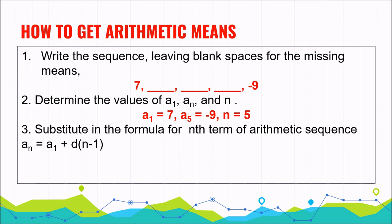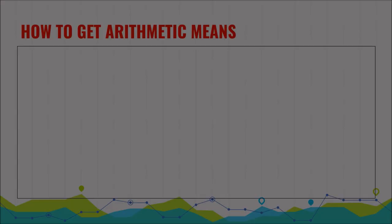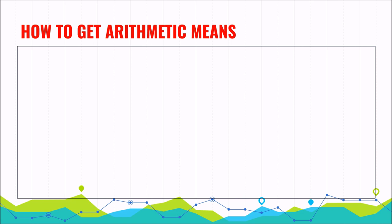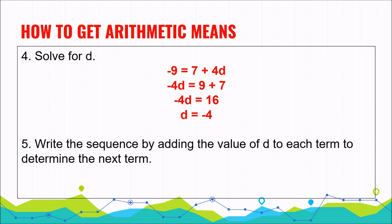Substituting into the formula: negative 9 equals 7 plus the quantity 5 minus 1 times d. Simplifying, negative 9 equals 7 plus 4d, then negative 4d equals 16, so the common difference is negative 4. Now write the sequence by adding negative 4 to each term: starting from 7, add negative 4 to get 3, add negative 4 to get negative 1, add negative 4 to get negative 5, and add negative 4 to reach the final given term, negative 9.